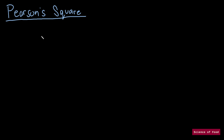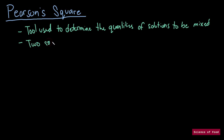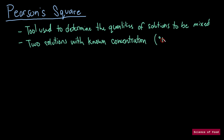Good day everyone! Today we will be discussing Pearson Square. This is a tool that you can use when dealing with solutions that you want to mix together. You can use this to, for example, mix a fruit concentrate with water and get the target degree Brix for your end product. This is a tool which you can use when mixing two solutions with known concentrations. For most of the examples we will be showing, they will be expressed in degree Brix.